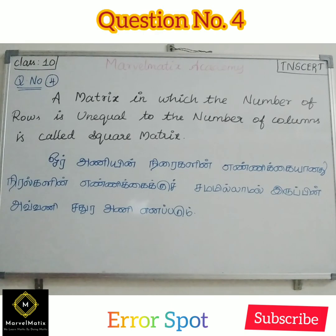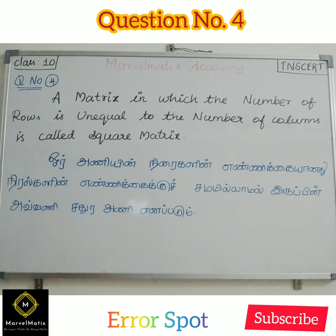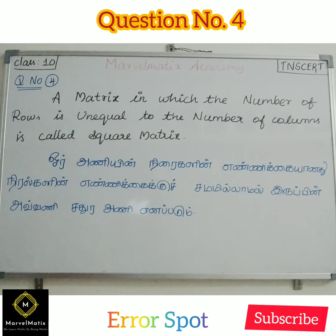Question number 4: A matrix in which the number of rows is unequal to the number of columns is called a square matrix. Now it's your time to spot the error.